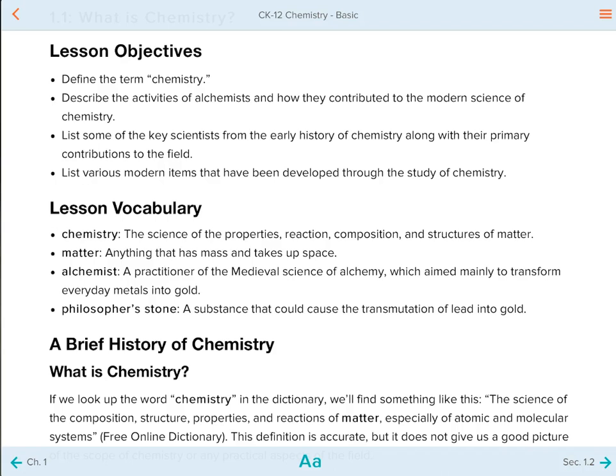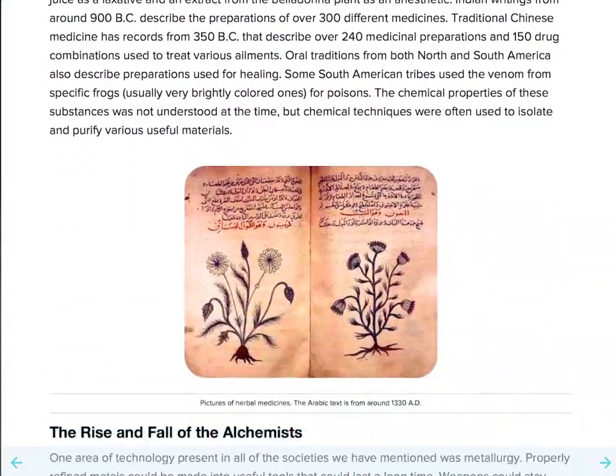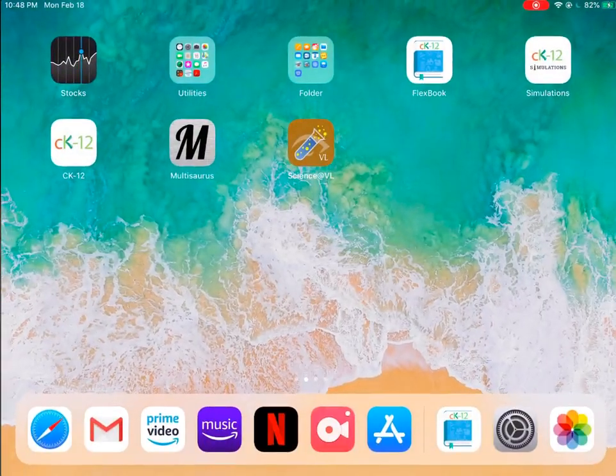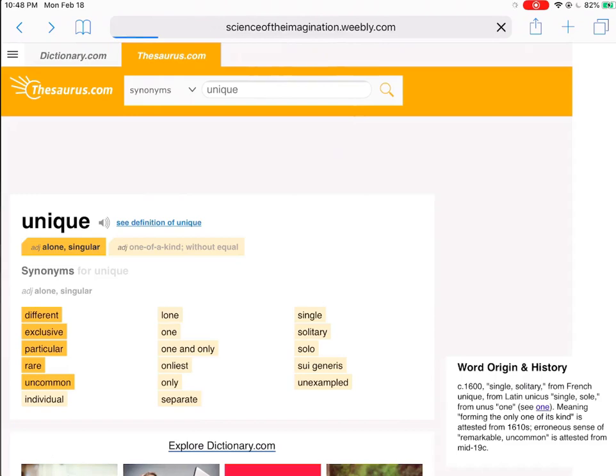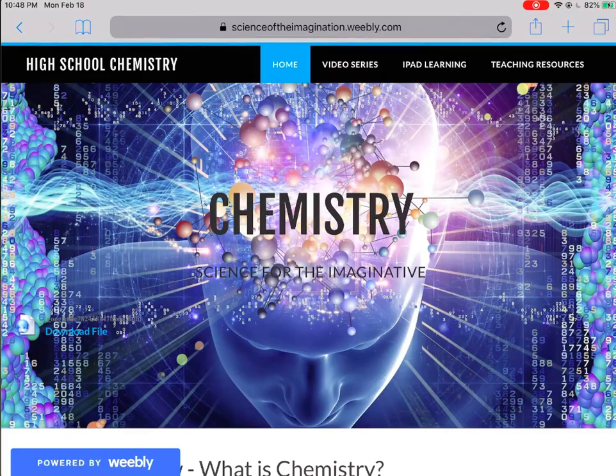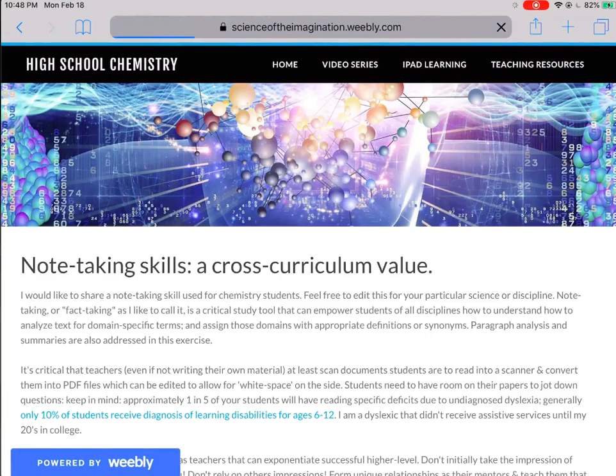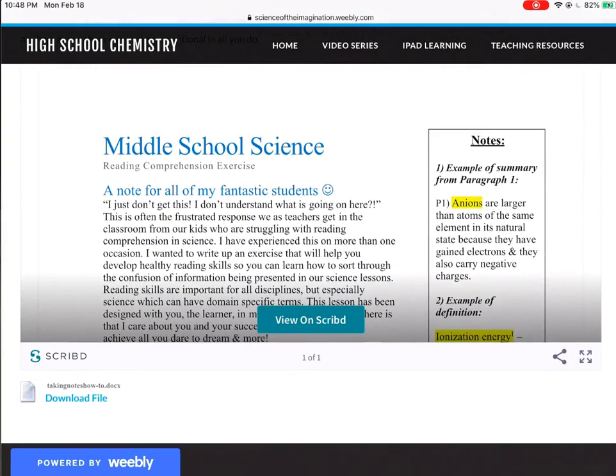So this is a way to kind of get them to think critically by downloading this and making sure they have access to it. If you go onto my website, let's go ahead and bring up my website real quick for reference. If you go to my website in the teaching resources tab, I have a chemistry reading section and it's called 'Taking Notes in Chemistry.'